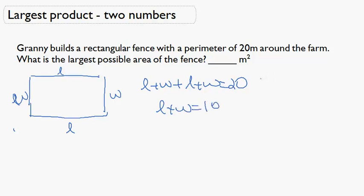But this actually isn't enough information because L can be 1 and W can be 9, and L can be 2 and W can be 8. So we want to figure out what the largest possible area can be.